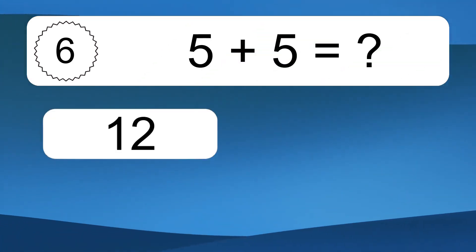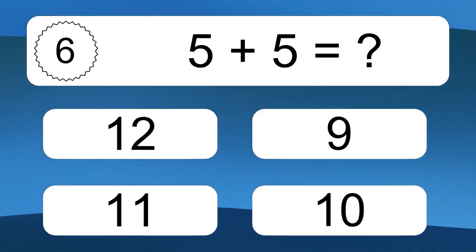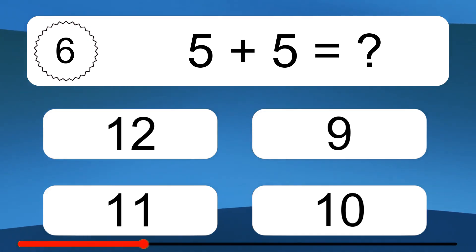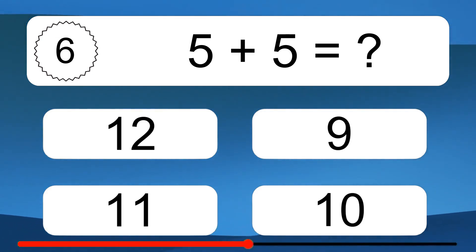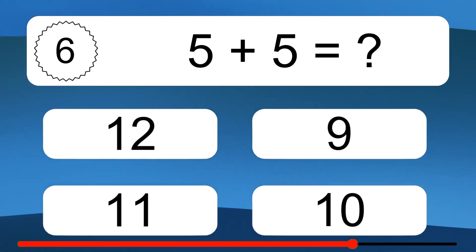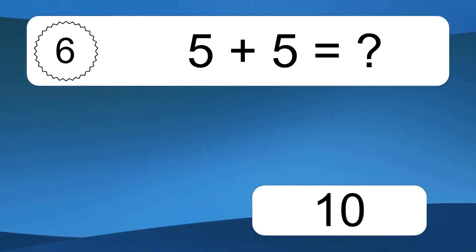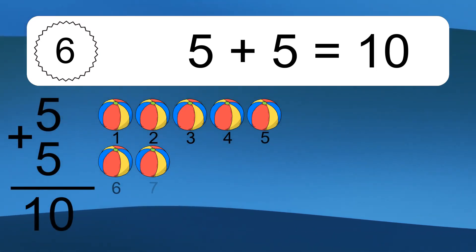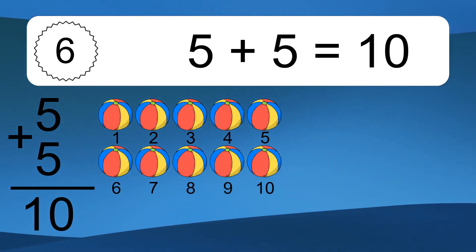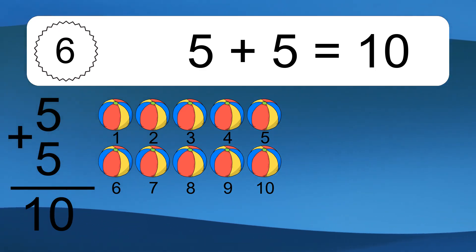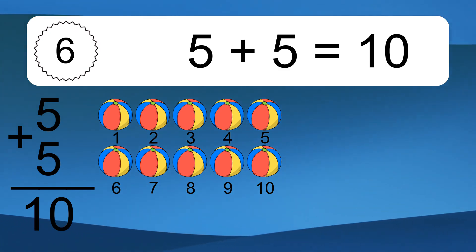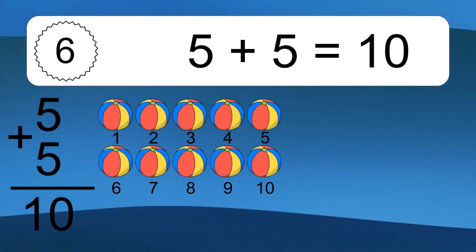5 plus 5 equals what? 5 plus 5 equals 10. Let's count it. 1, 2, 3, 4, 5, 6, 7, 8, 9, 10.